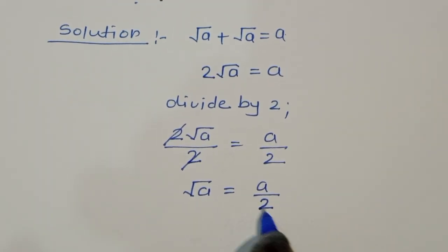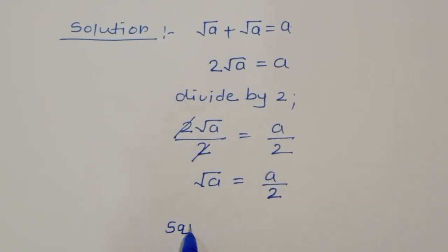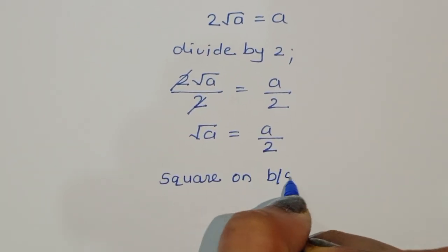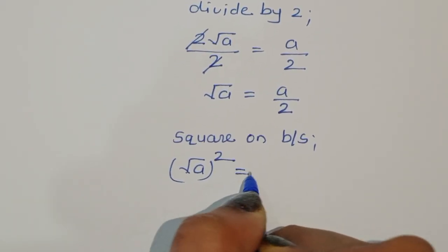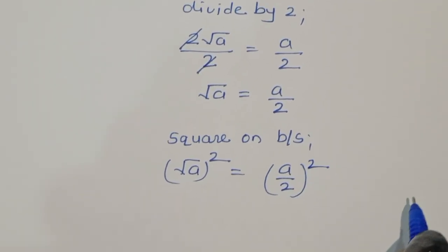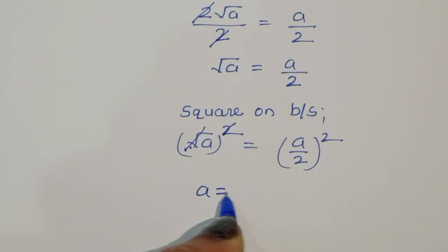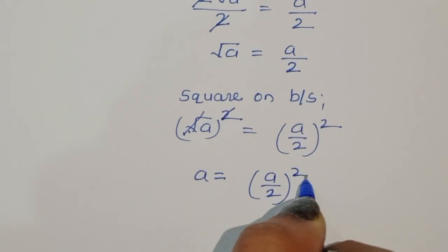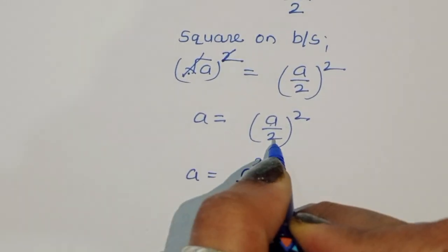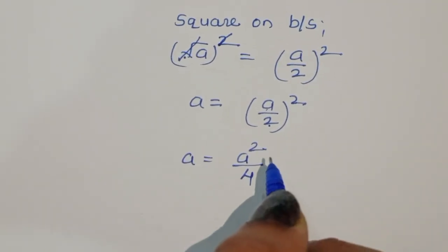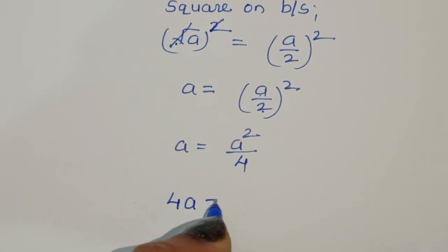Now square root of a is equal to a by 2. We need to eliminate the square root, so we take the square on both sides. Square root of a, whole squared, is equal to a by 2, whole squared. The square cancels the square root on the left, giving us a is equal to a squared by 4. Multiplying both sides by 4, we get 4a is equal to a squared.